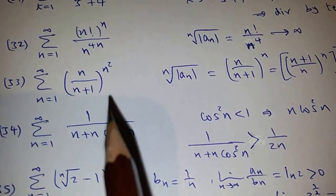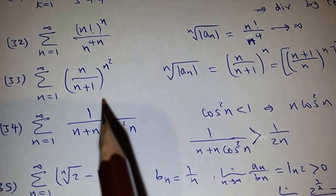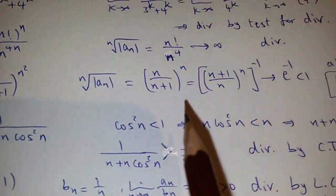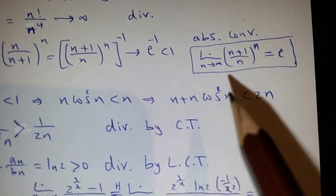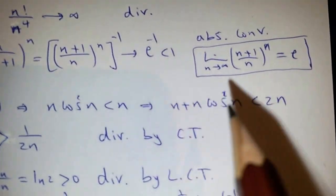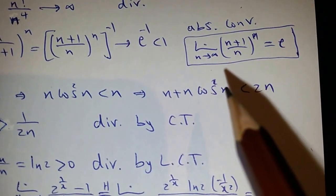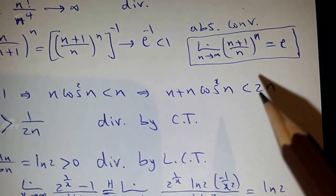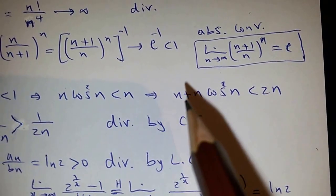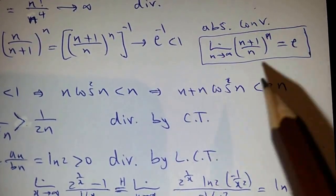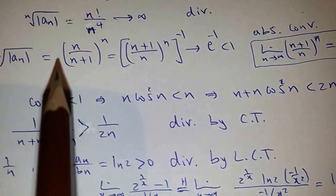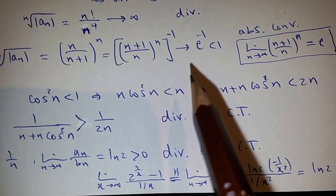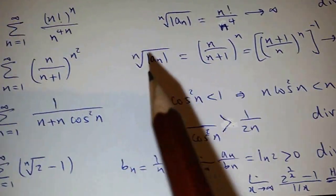This is also another candidate for the root test. If you use the root test, you will find it simplifies using the fact that the limit of ((n+1)/n)^n = e. Try to prove this: call y equal to this, apply ln to both sides, and prove that ln(y) → 1, so e^(ln y) → e. Now this gives n/(n+1) raised to n, which goes to e^(−1). That's less than 1, so it's absolutely convergent.